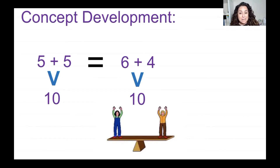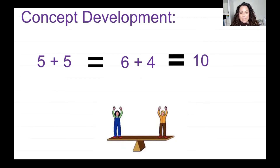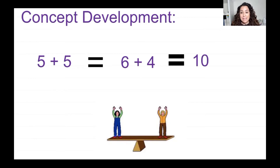Now let me show you something. I'm going to take away these and put another equal sign, then put a 10. Let's say it together: 5 plus 5 equals 6 plus 4 equals 10. Now instead of saying 'equals,' let's say 'is the same as': 5 plus 5 is the same as 6 plus 4, and that is the same as 10. So they all balance — they all equal the same thing.